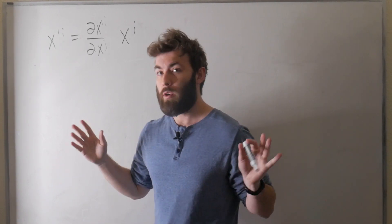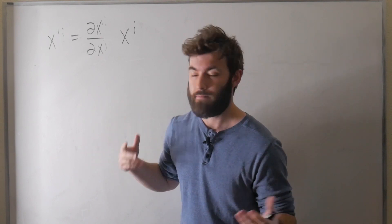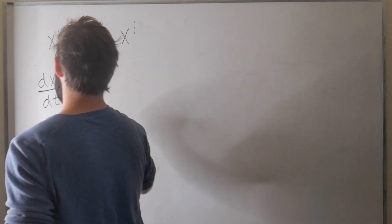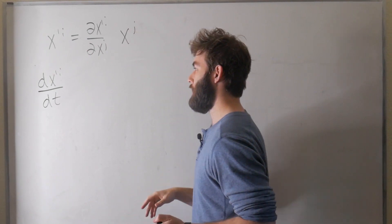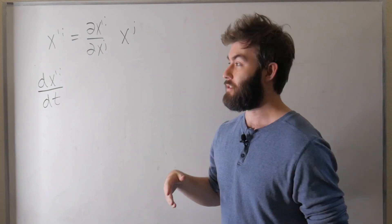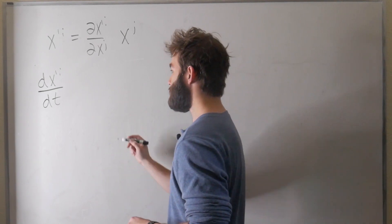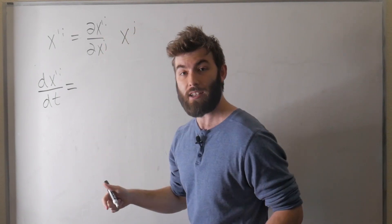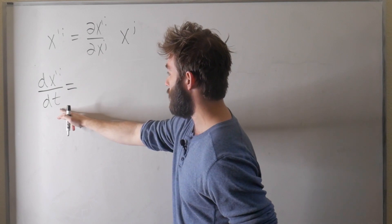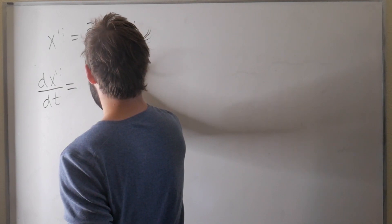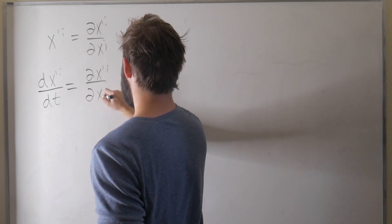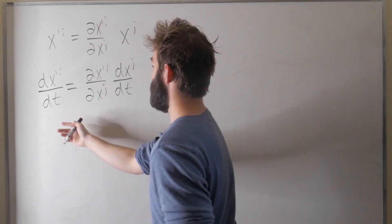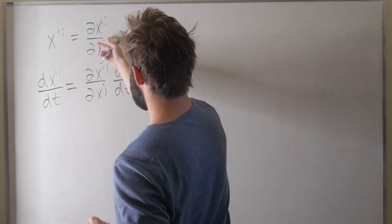What I want to do right now is take the derivative of this with respect to time. So what is dx prime i over dt? We have the components of a position vector, and taking the time derivative is like a velocity. So I'm basically asking: how does the velocity transform? When we do that, we have these transformation coefficients out front, and they're not necessarily constants. So we need to use the product rule.